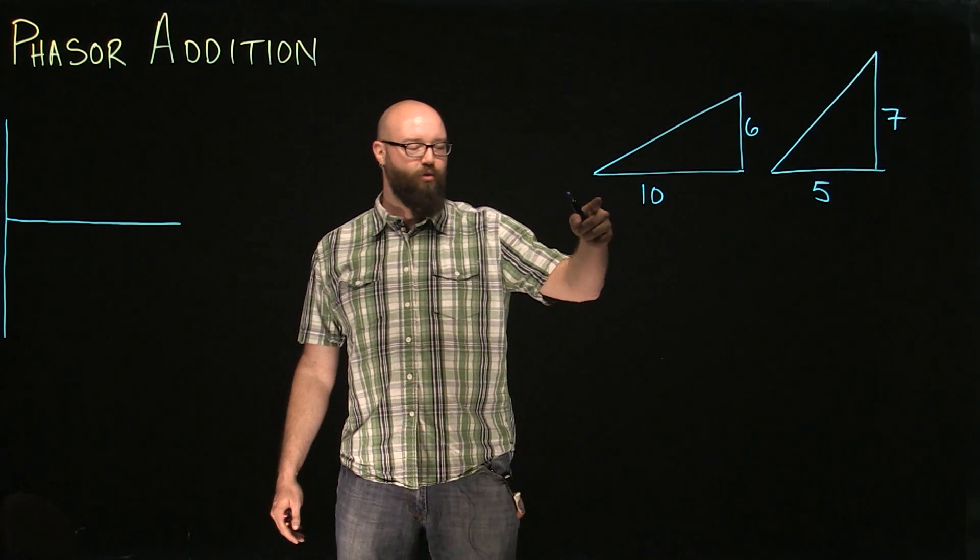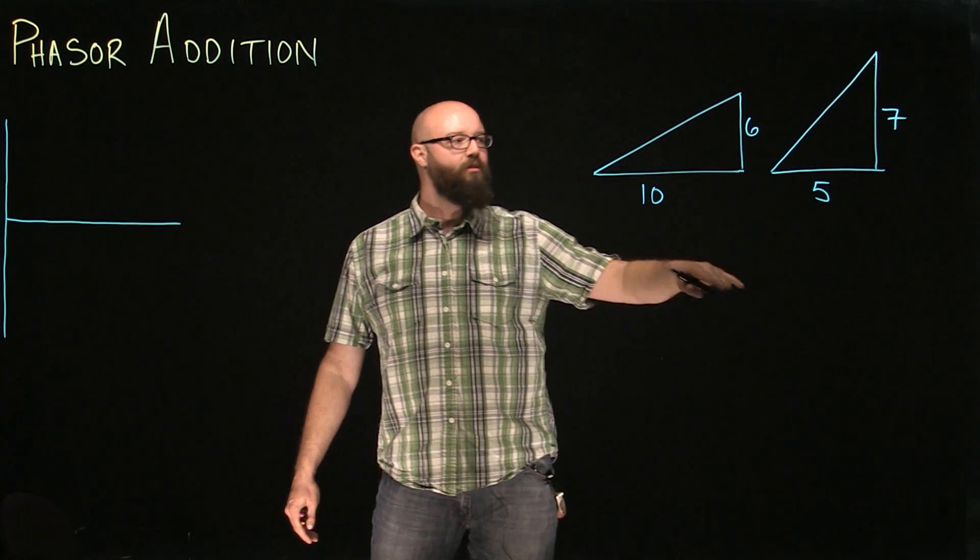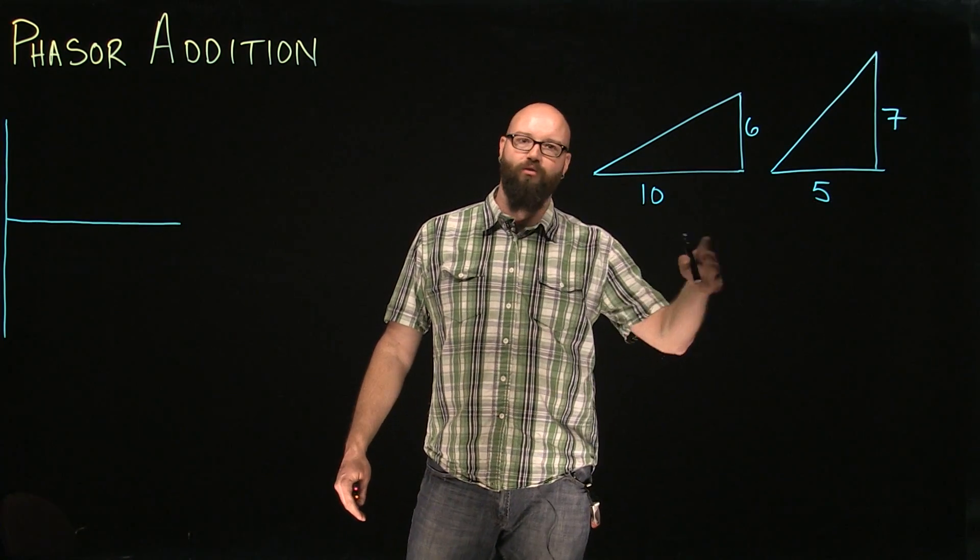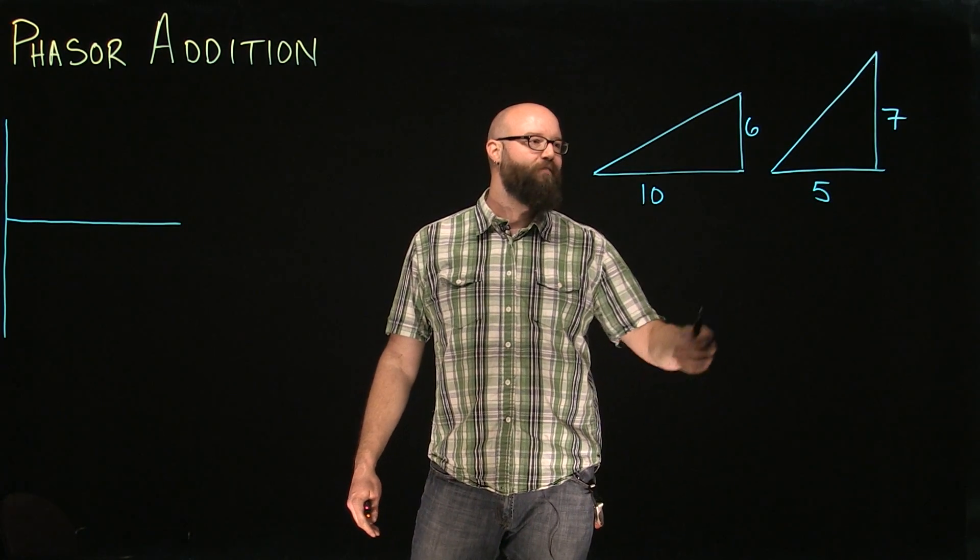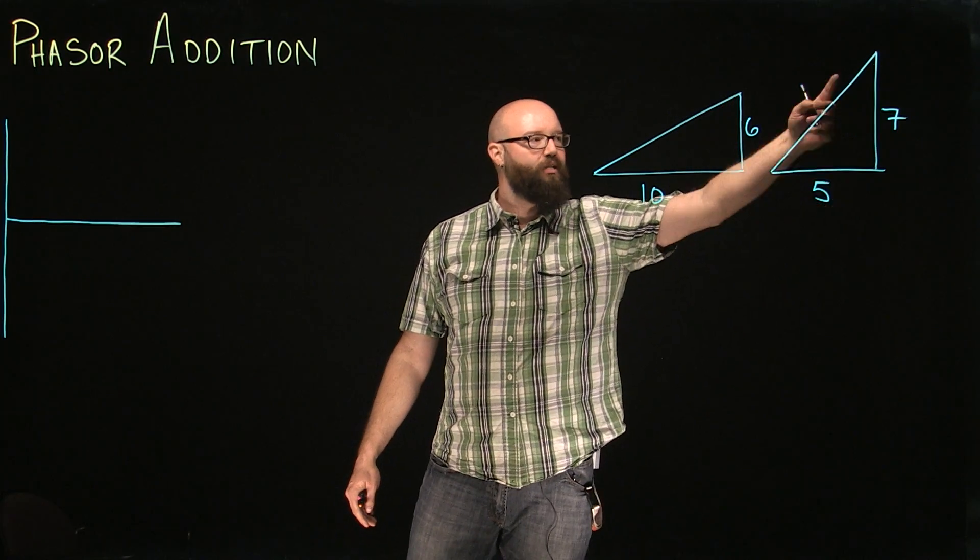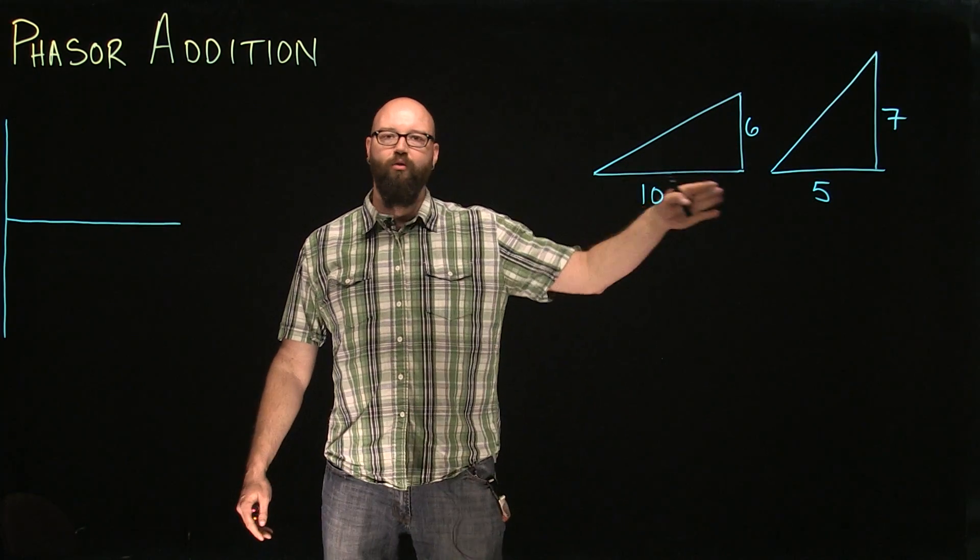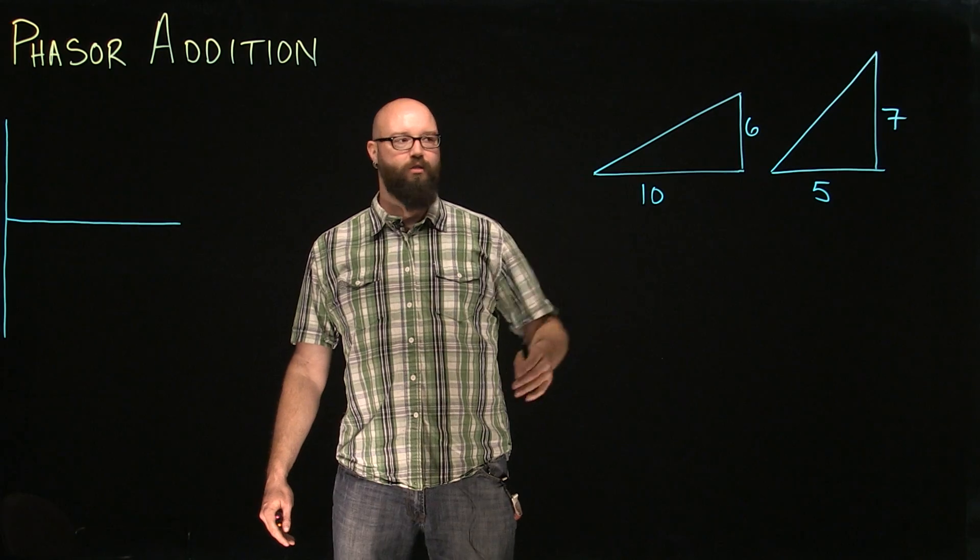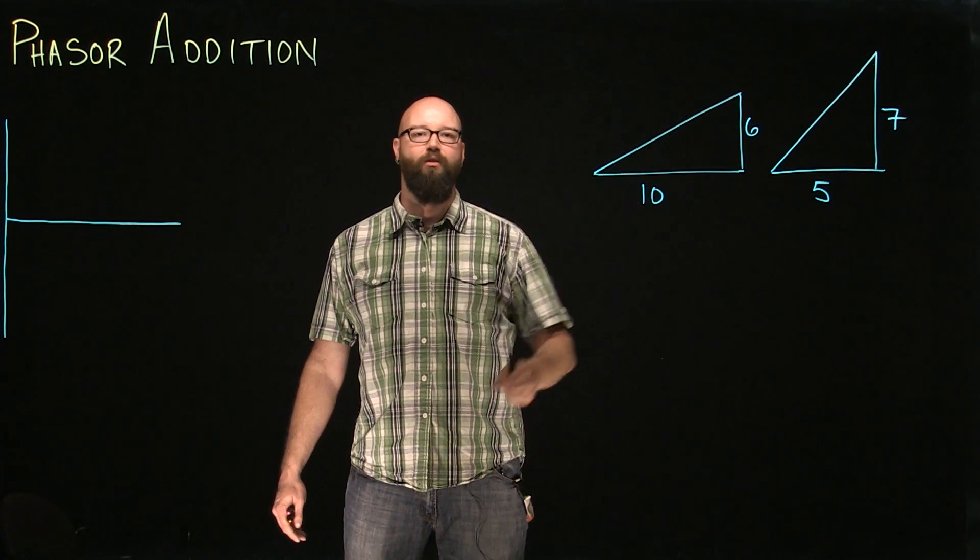on our two triangles, we have a base of 10, we have a base of 5. We could also call it our horizontal of 10, horizontal of 5. We have a vertical of 6 and a vertical of 7. I can add horizontals and I can add verticals. What I can't add is the two hypotenuse.